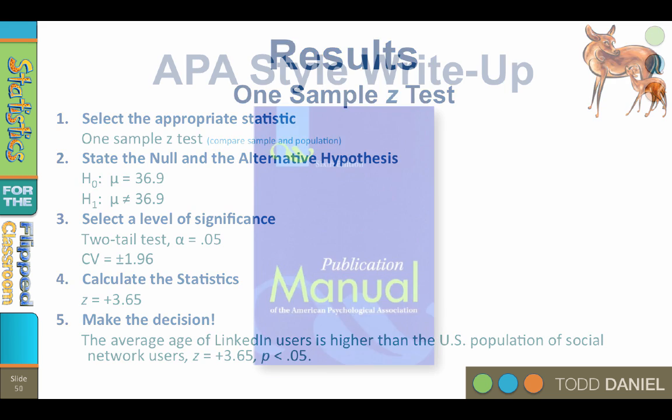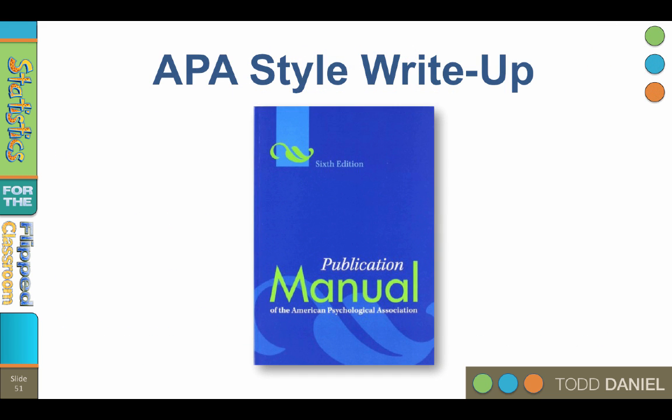Finally, we should write up our findings in proper APA style. We should describe our research question, the type of test we used, sample size, means of the sample and standard deviations when we know them, and the findings. Basically, we should include everything that would be required for someone else to recalculate our statistics. And here is an example of how we might word this.